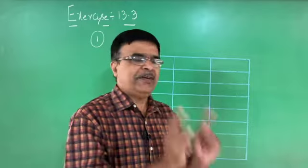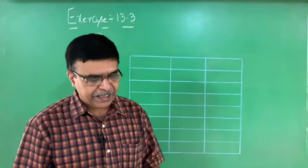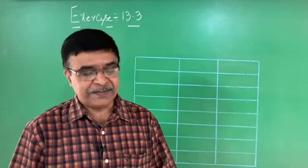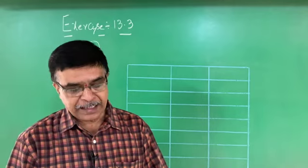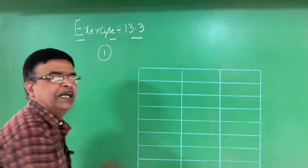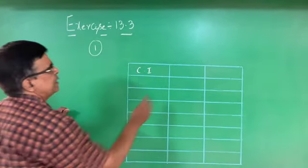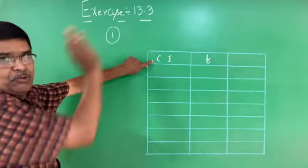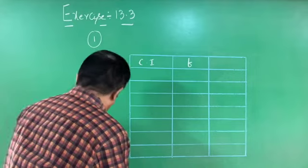The first problem: the following frequency distribution gives the monthly consumption of electricity of 68 consumers of a locality. Find the median of the data. The first column is class interval, and the second column is frequency.